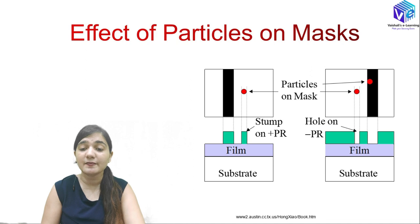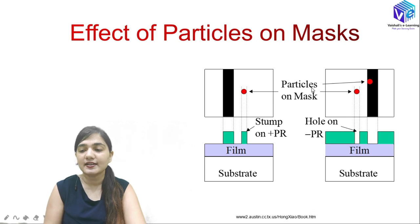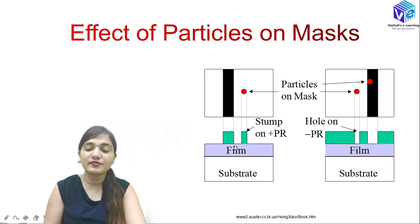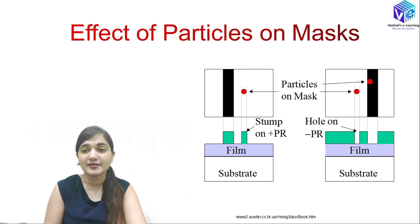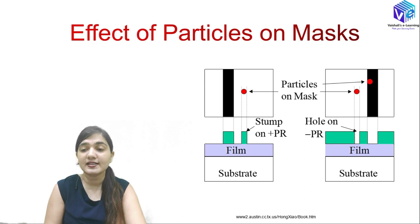This figure represents the effect of particles on the mask. Masks are required for the fabrication of the diffusion layer. Whenever we have particles on the mask, the particle present here will form a stump on the photoresist layer, creating an extra photoresist region. If I need to remove the silicon dioxide from that area, it will not be removed — causing defects and degrading the yield.